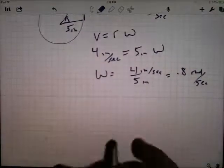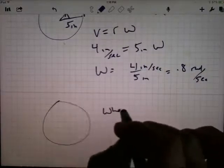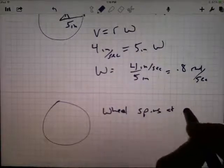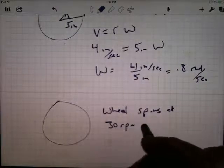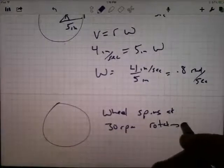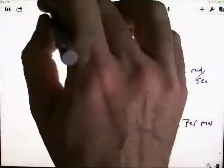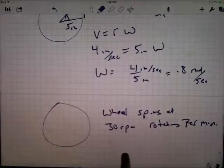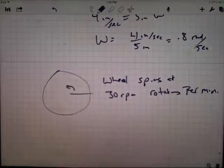On the other hand, if you know the angular speed, in fact let's do an example where you've got a wheel spinning. Wheel spins at 30 RPM, RPM is rotations per minute. So that's not radians per minute, that's rotations per minute, so this thing is spinning here 30 rotations per minute.